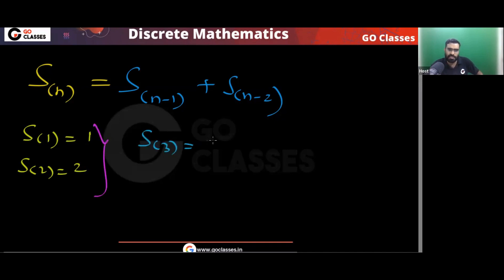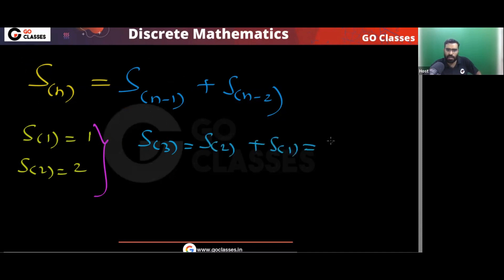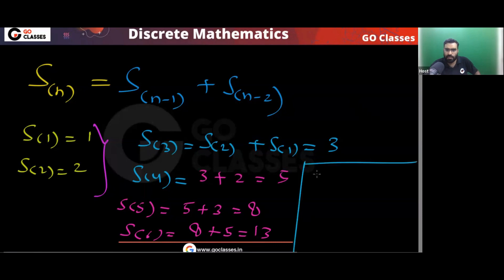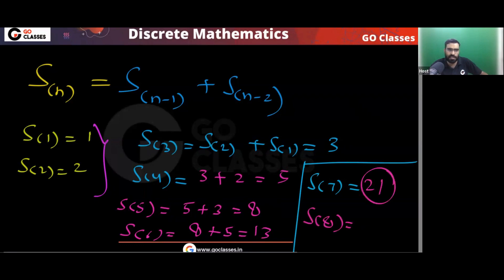Now you can find the values. S3 = S2 + S1 = 3. S4 = S3 + S2 = 5. S5 = S4 + S3 = 8. S6 = S5 + S4 = 13. S7 = S6 + S5 = 21. S8 = S7 + S6 = 21 + 13 = 34. So the number of ways to climb eight stairs is 34.